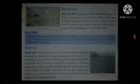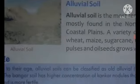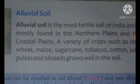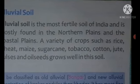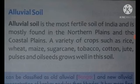About six types of soils are found in India. The first is alluvial soil. Alluvial soil is the most fertile soil in India and is mostly found in the northern plains and coastal plains. A variety of crops such as rice, wheat, maize, sugarcane, tobacco, cotton and jute are grown in alluvial soil.